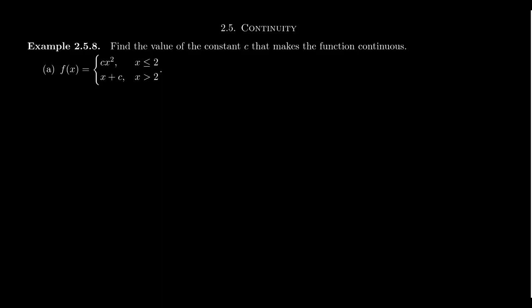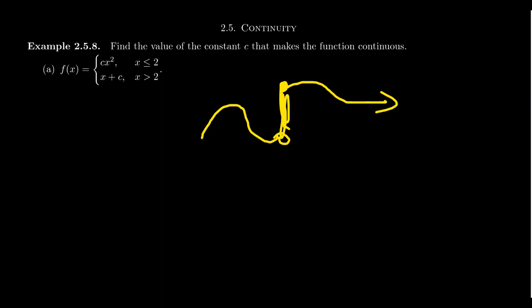There are times where we might want to build a piecewise function but still want it to be continuous. In order for a piecewise function to be continuous, we have to avoid the following problem: when you jump between one piece to the other, we can't have a jump discontinuity. We need the pieces to come together and connect.